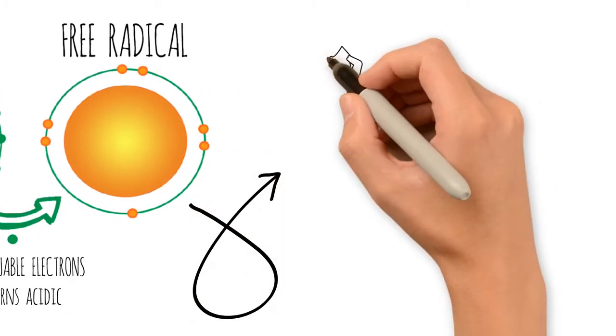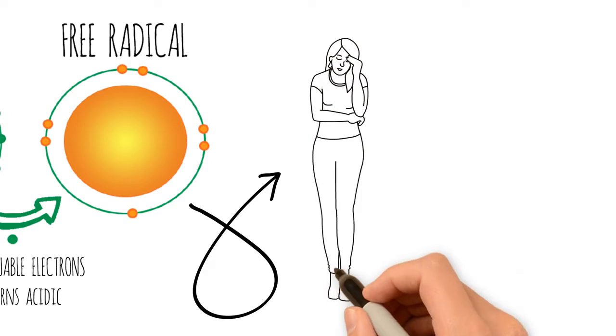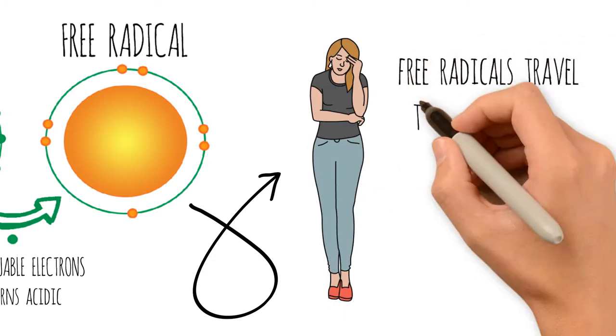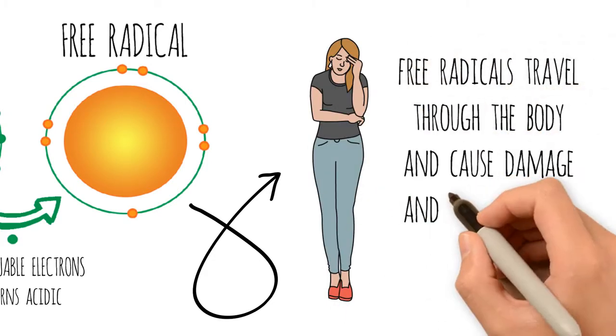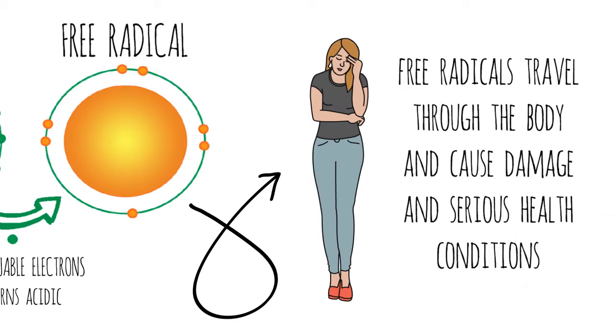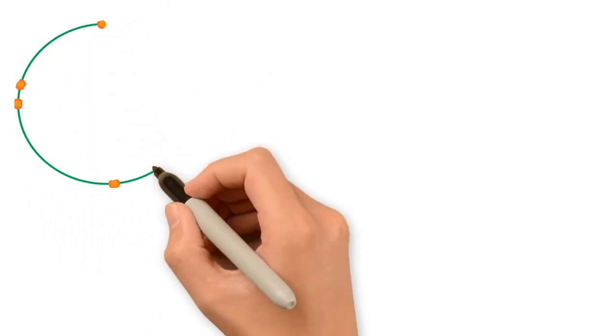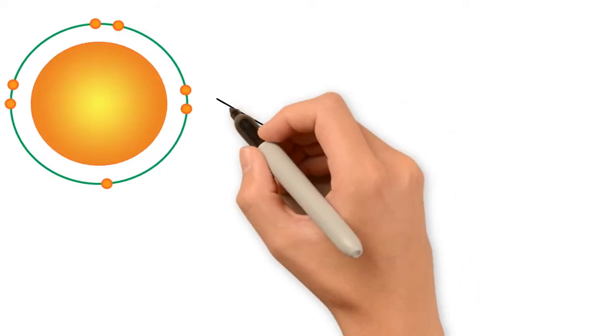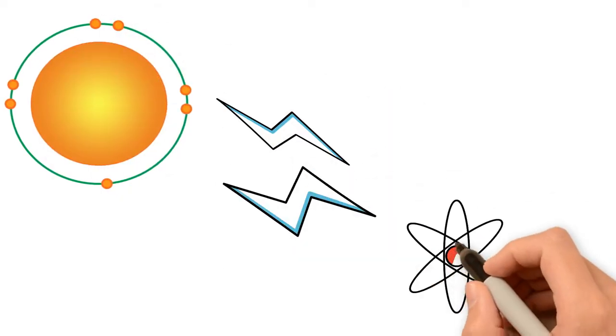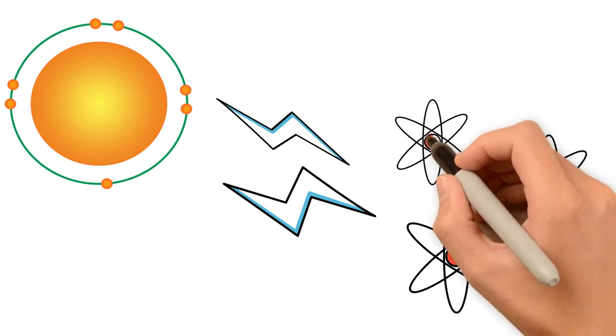These free radicals travel through our bodies and steal away electrons from our cells. This is called free radical damage and is a major contributor to many health conditions. Think of rust on your car. Free radicals operate in a similar manner in our bodies, slowly zapping our cells of life force and stealing valuable electrons.